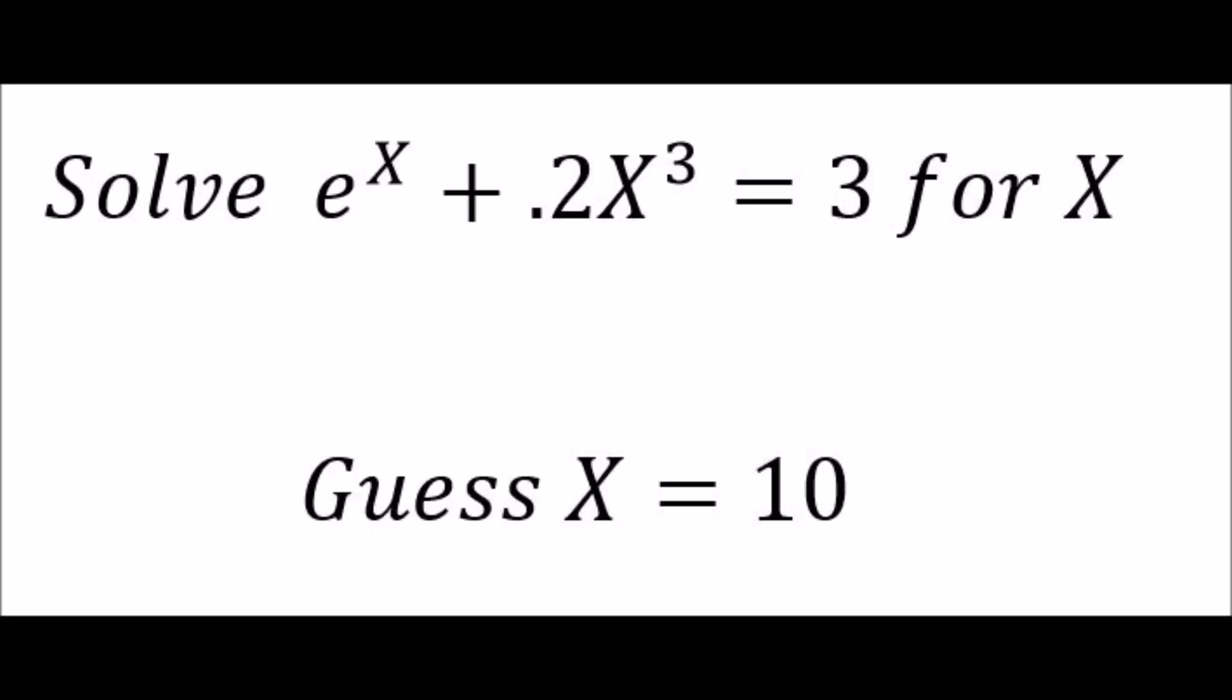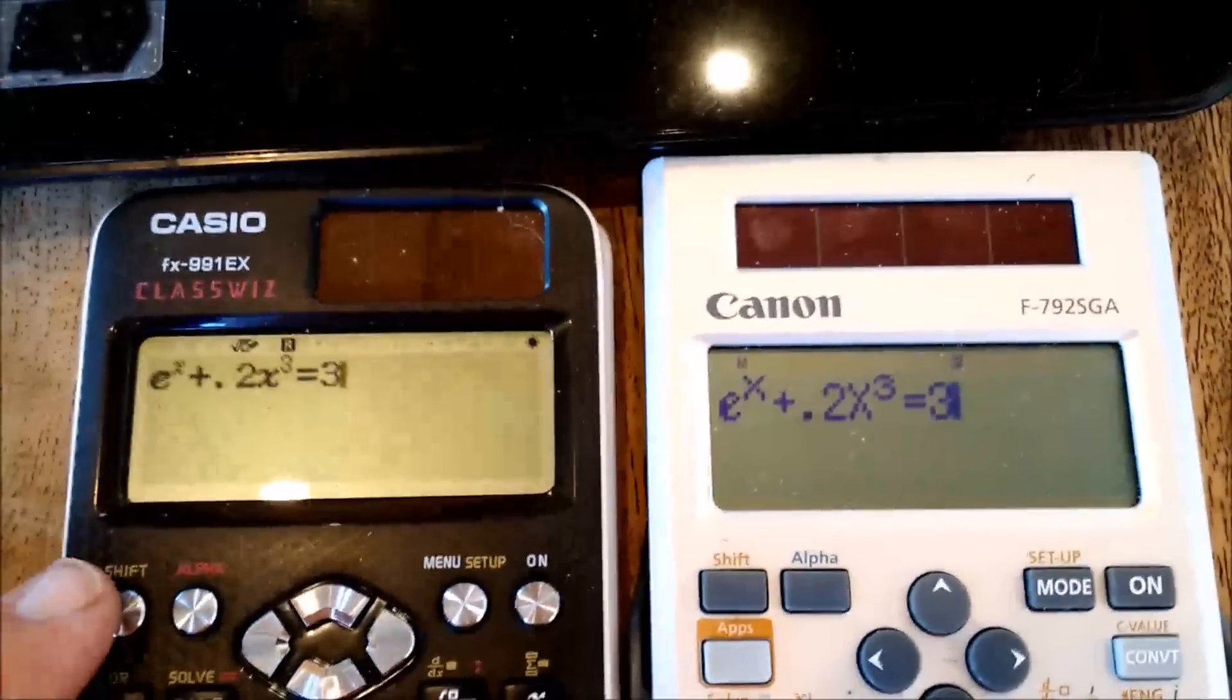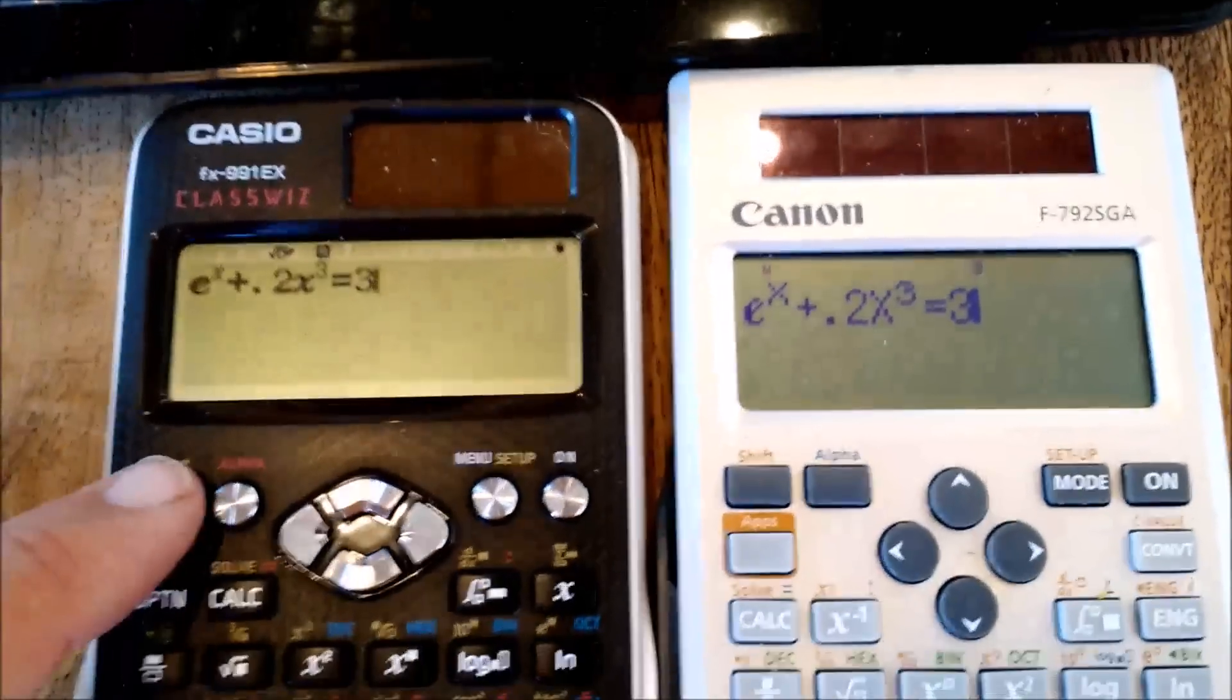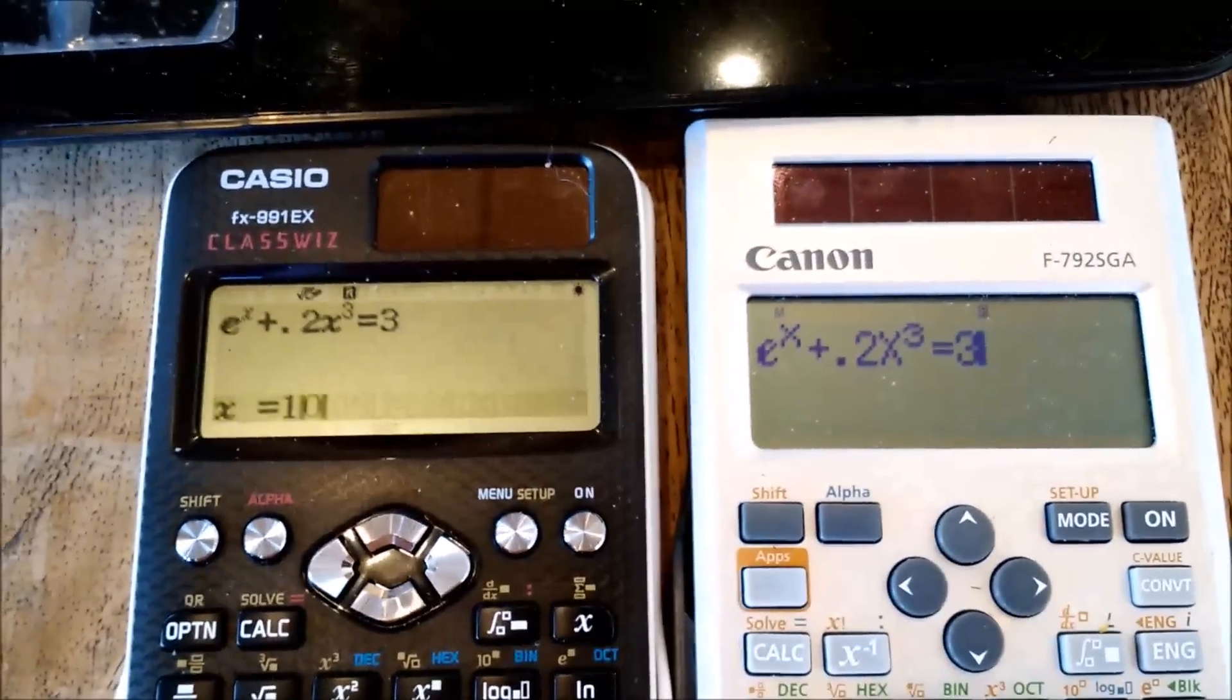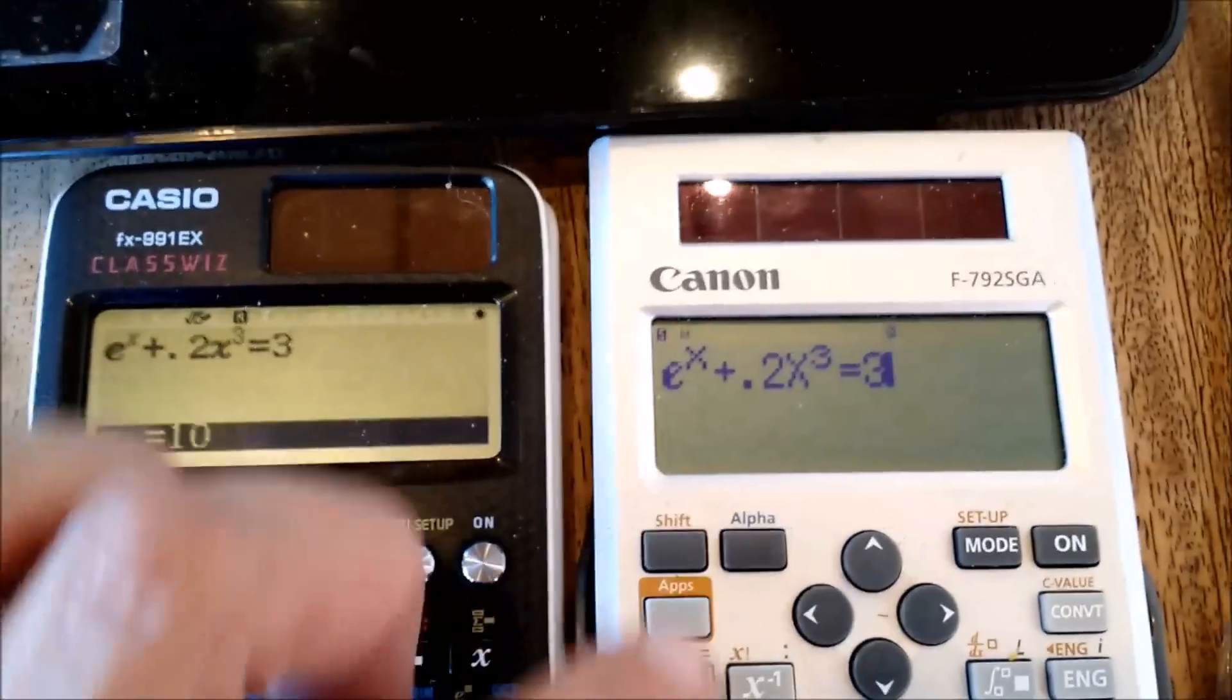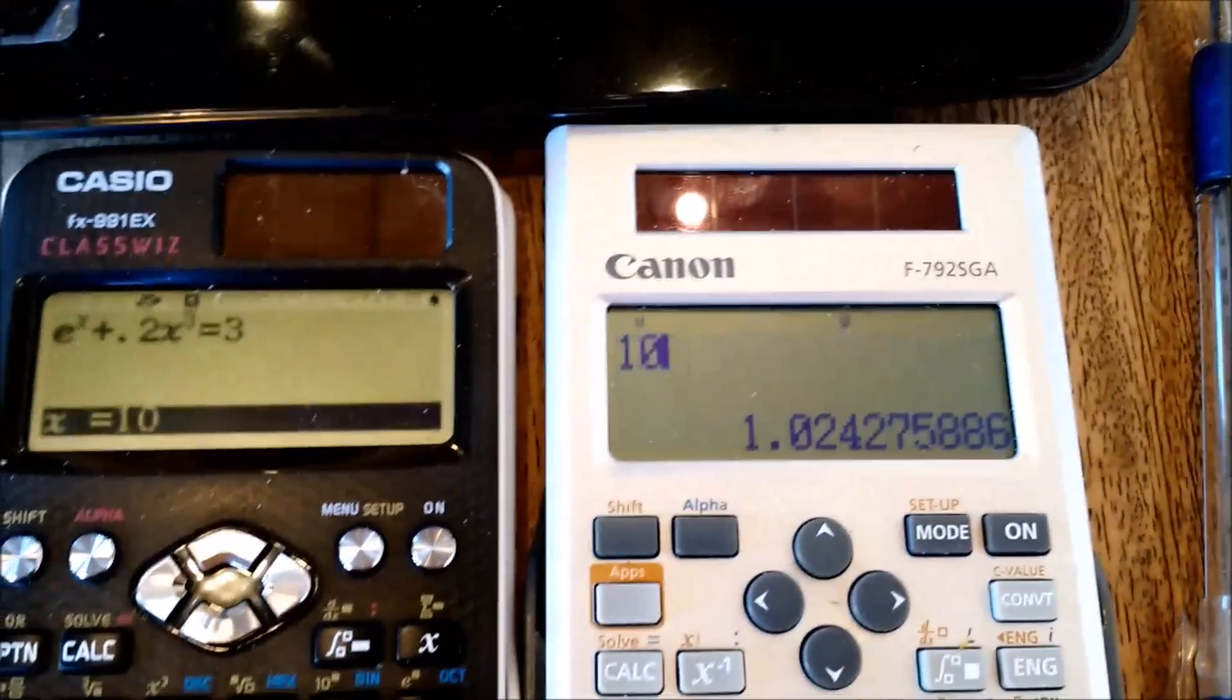Next up we're going to solve the equation e to the x plus 0.2 times x cubed equals 3 for x, and give an initial guess of 10. I have the equation set up and I'm going to enter the solve function on both calculators separately.